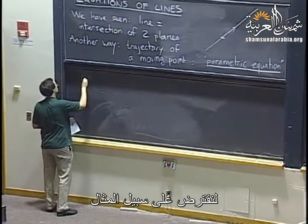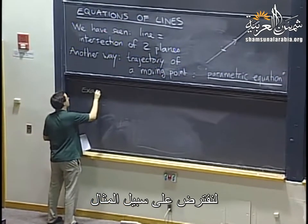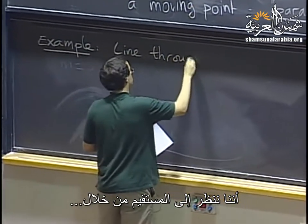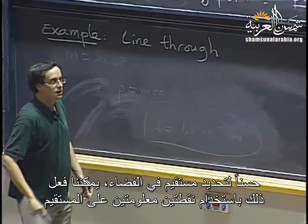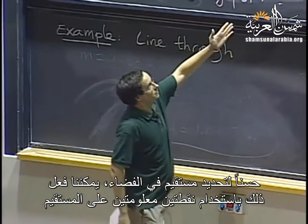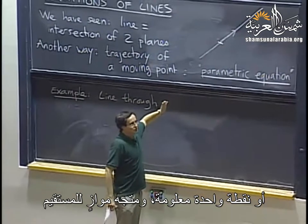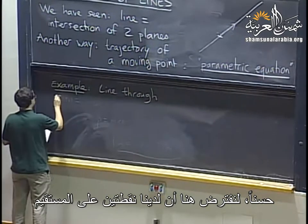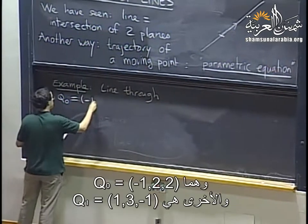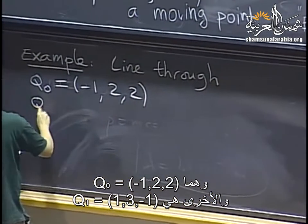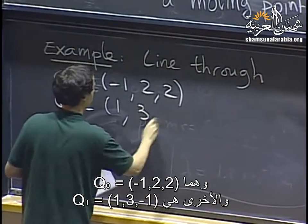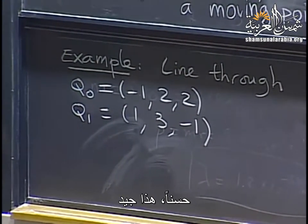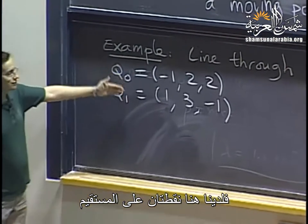For example, to specify a line in space, I can do that by giving you two points on the line, or by giving you a point and a vector parallel to the line. Let's say I give you two points: q₀ = (−1, 2, 2) and q₁ = (1, 3, −1). We have two points on that line — now how do we find all the other points?